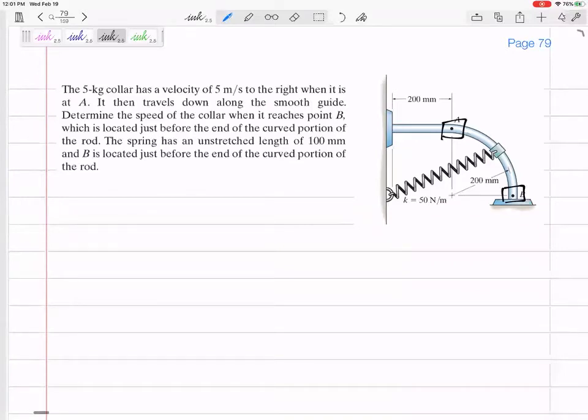The point B is located just before the end of the curved portion. The spring has an unstretched length of 100 millimeters. And B is located just before the end of the curved portion of the rod. So all of these problems, like point B, it hasn't hit the wall yet. We haven't done problems where we're trying to find something after it hits the ground or hits the wall. Don't tell me the final velocity there is zero. It's right before it hits the wall at B.